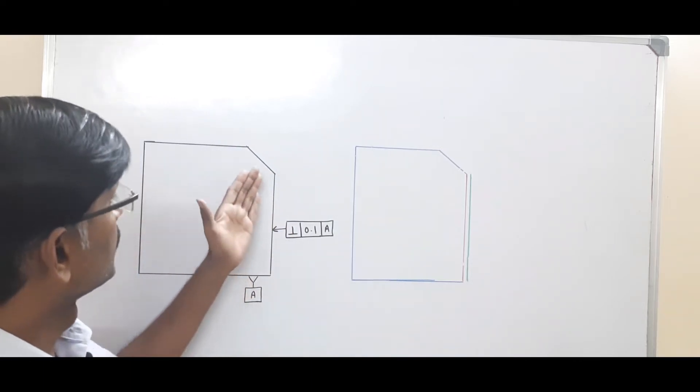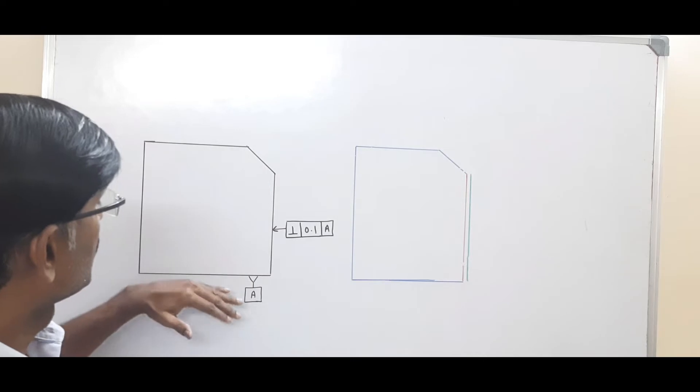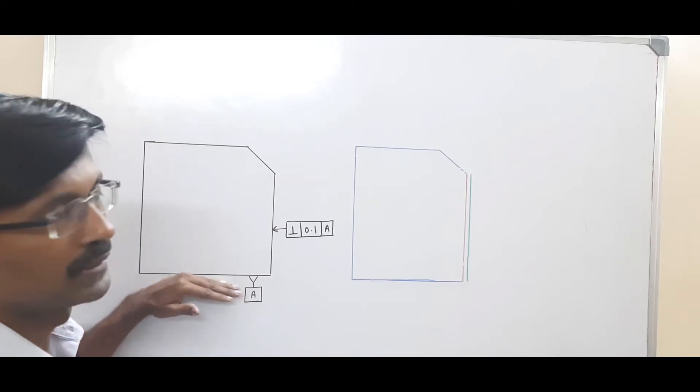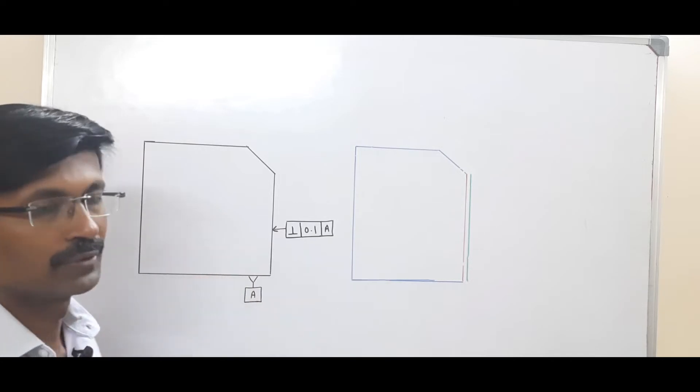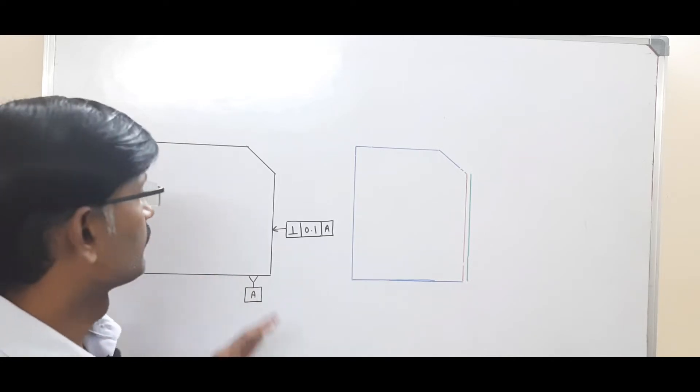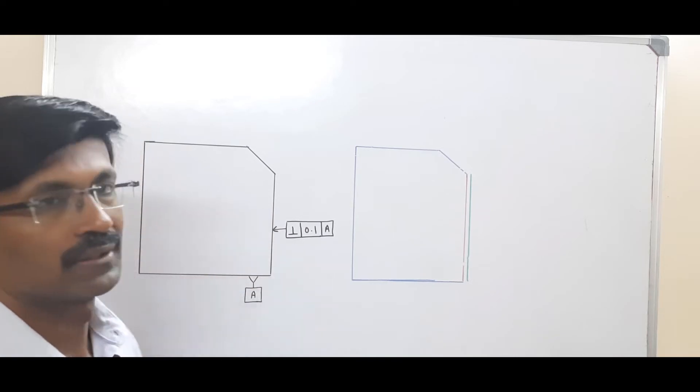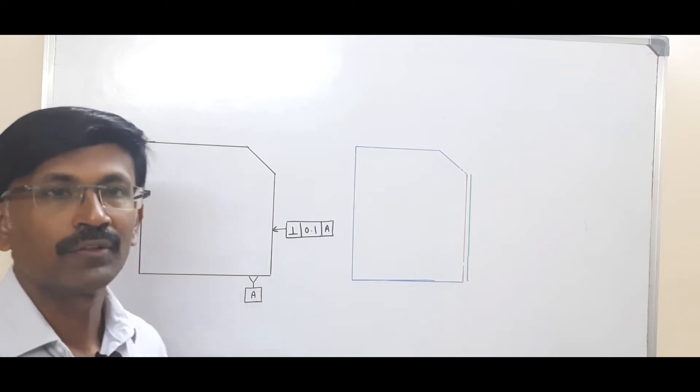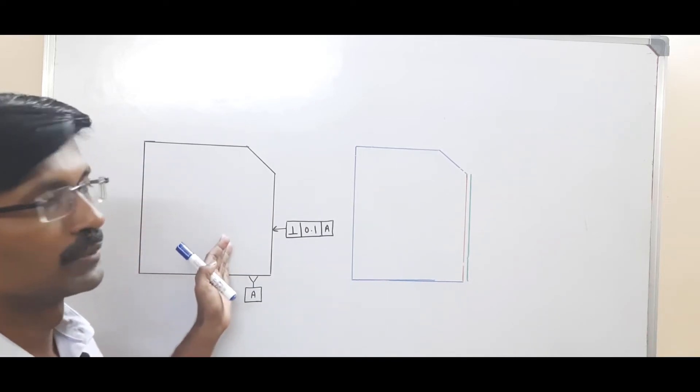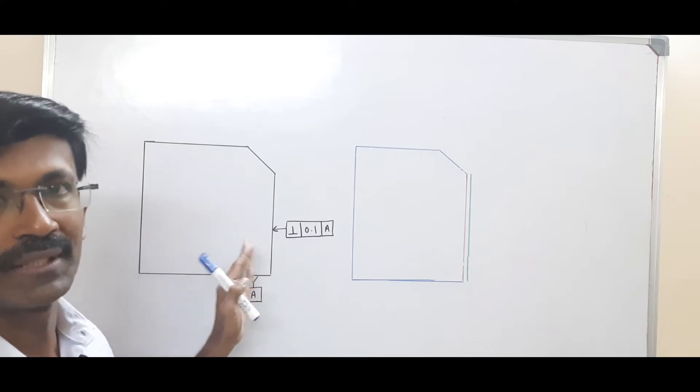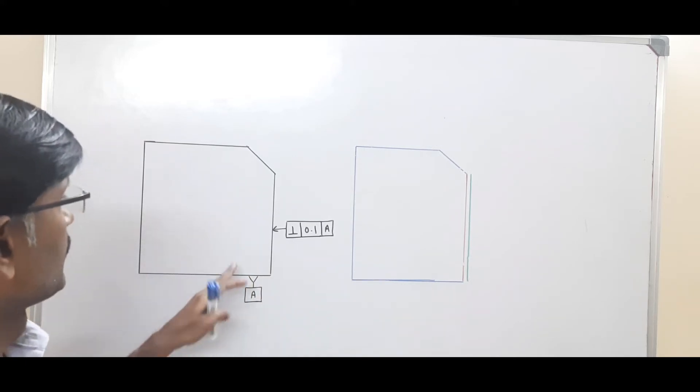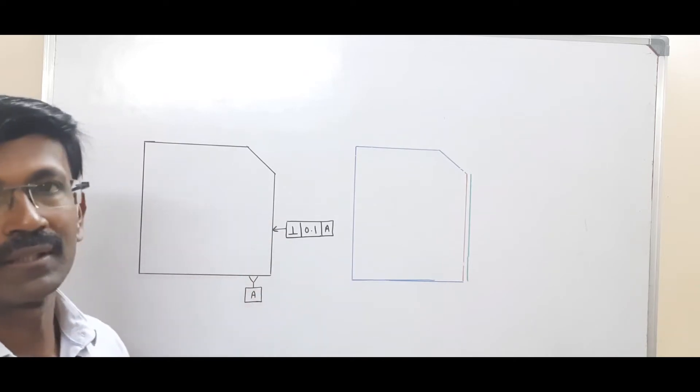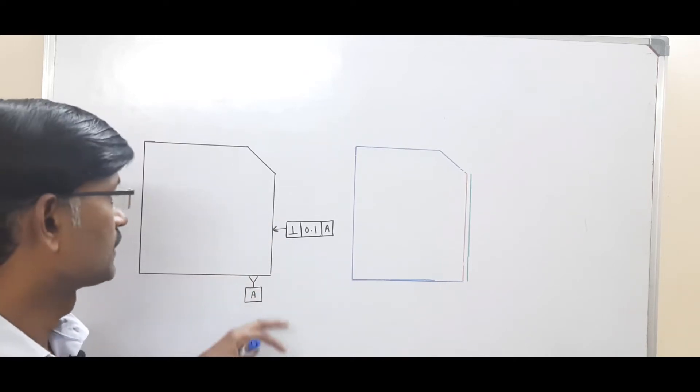In this example, this feature is at 90 degrees to the datum feature. So here I should not show the 90 degree. If you remember, one of the fundamental rules tells that whenever there are two features which are at right angles to each other, we are not supposed to show the angle. It is by default understood that there is a 90 degree angle. So whenever we have surfaces at 90 degrees or 270 degrees, then we can apply perpendicularity.